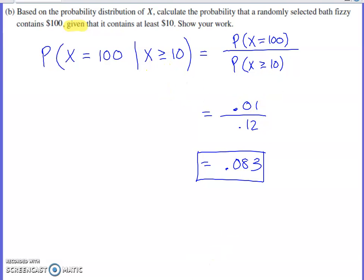We computed the probability that it was going to be greater than or equal to $10 back in part B, that was 0.12. The probability that we actually have $100 in that fizzy is 0.01. So 0.01 divided by 0.12 is going to end up giving you an answer of 0.083.